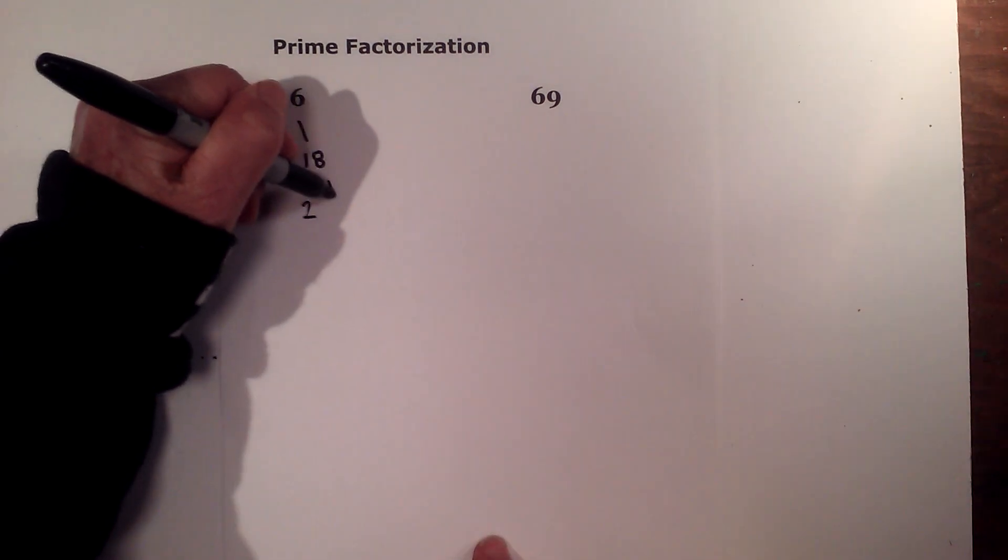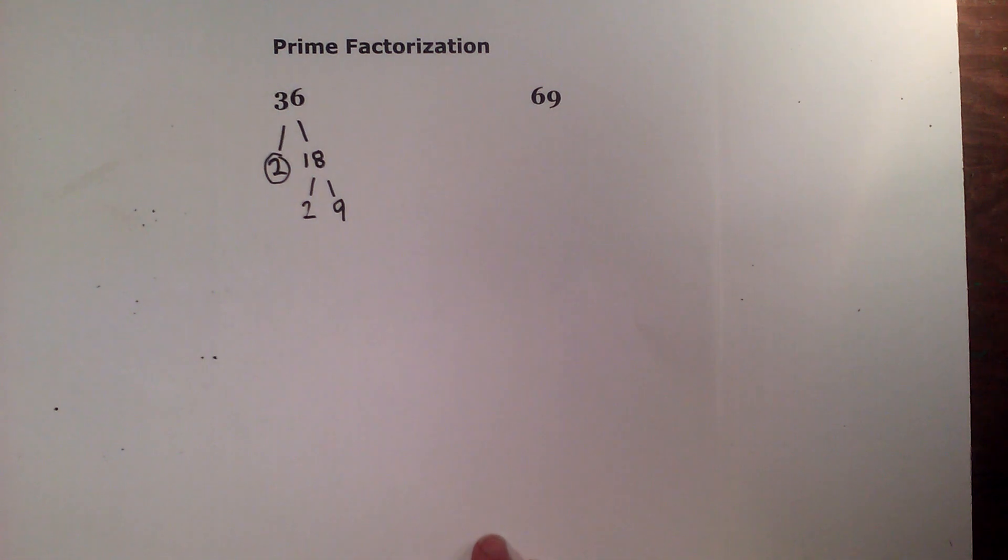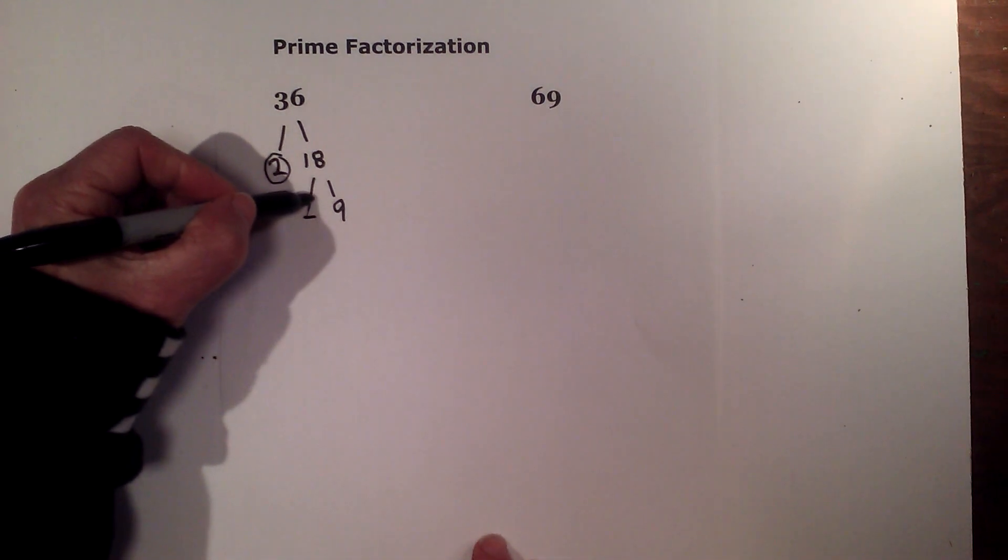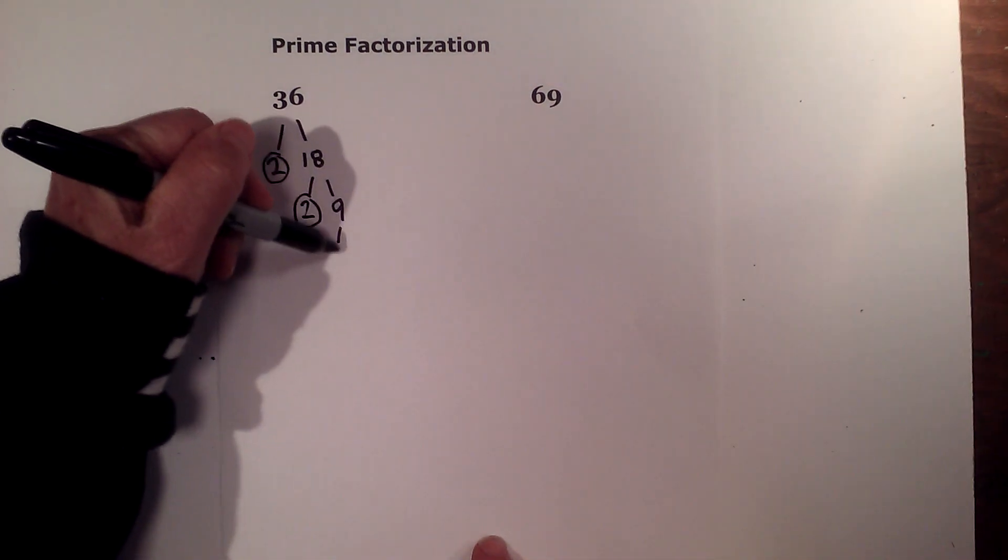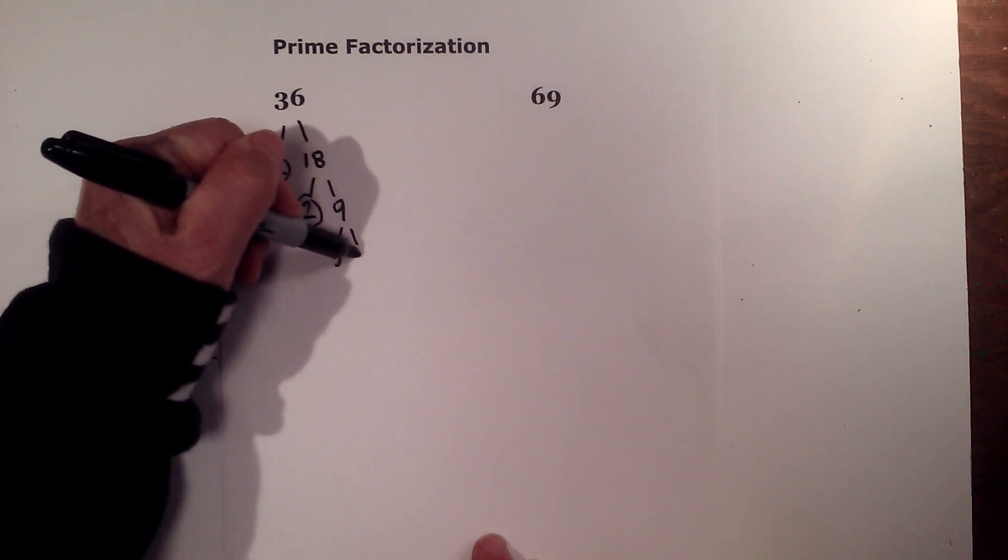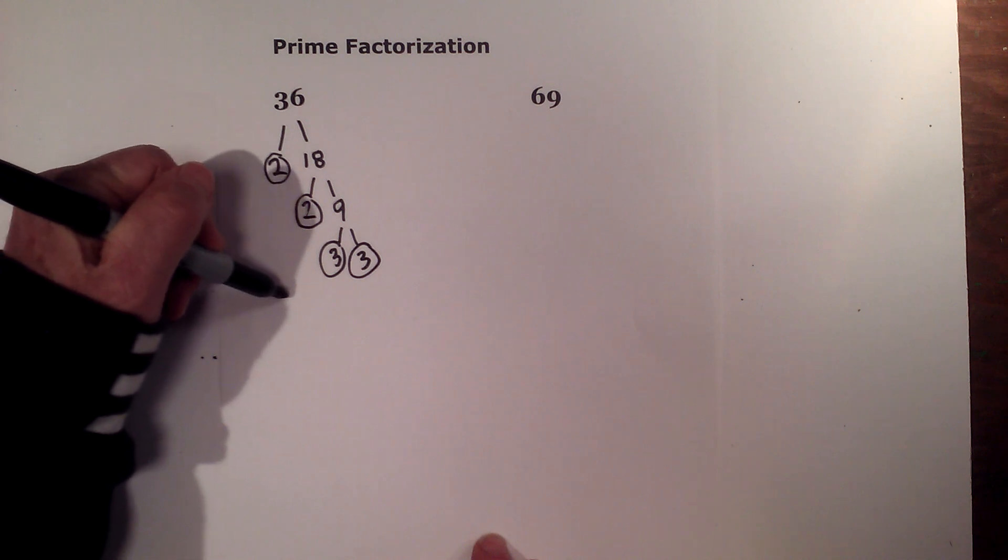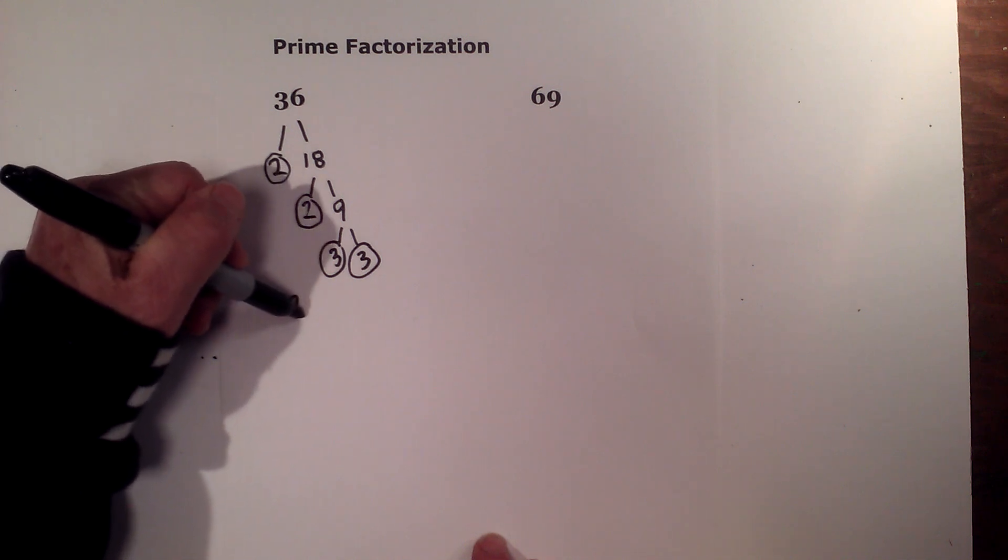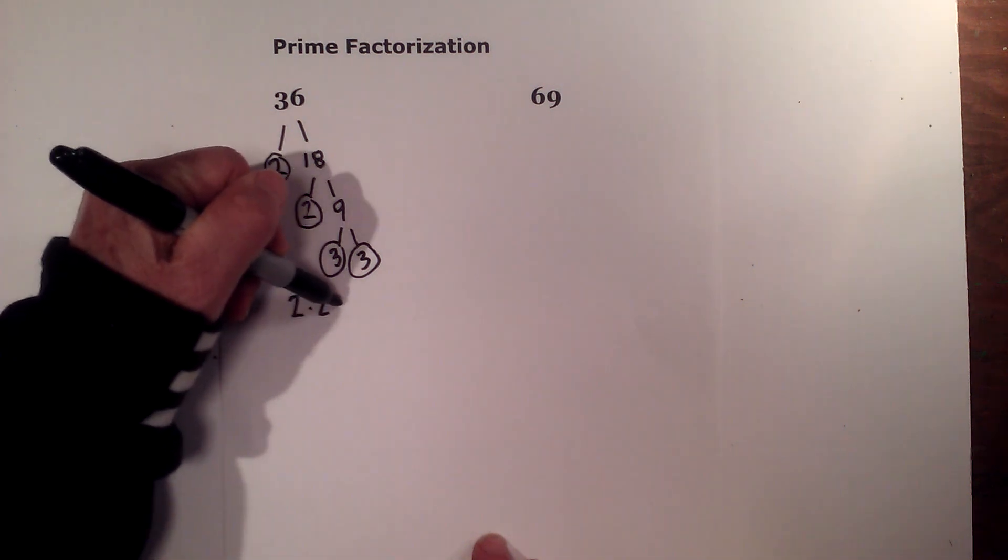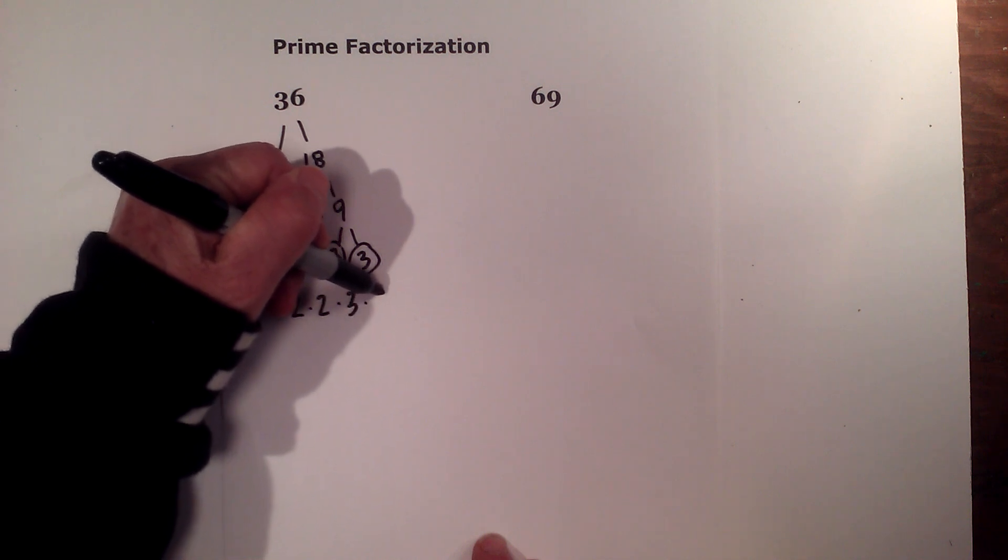Next we have 2 times 9 equals 18. Circle the 2 because it is prime. And now 3 times 3 equals 9. Circle both 3s because they are prime. So the prime factorization is 2 times 2 times 3 times 3.